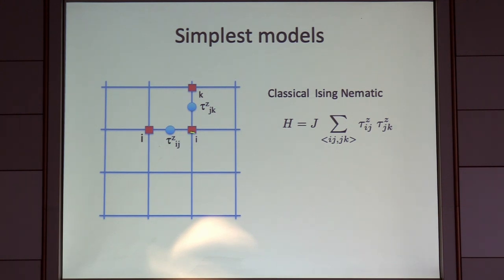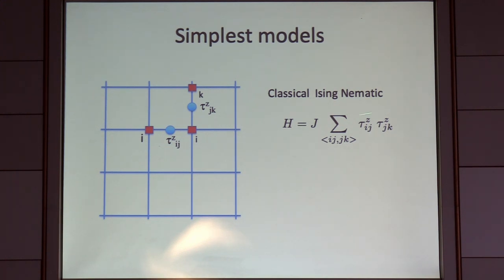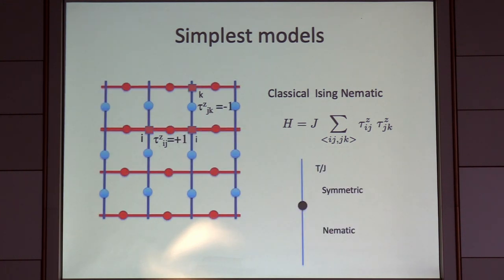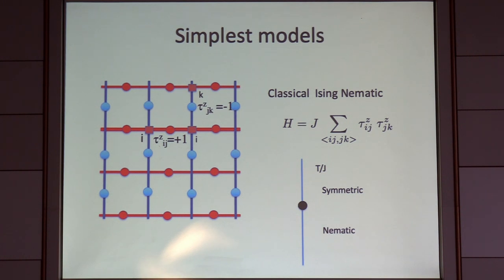I have a square lattice with a pseudo-spin degree of freedom that lives on the bonds of the lattice and can take two values: tau-z equals plus one or minus one. The simplest model I write down is just a classical Ising antiferromagnet. The ground state of this model has, for instance, tau-z equals plus one on all the x-oriented bonds.